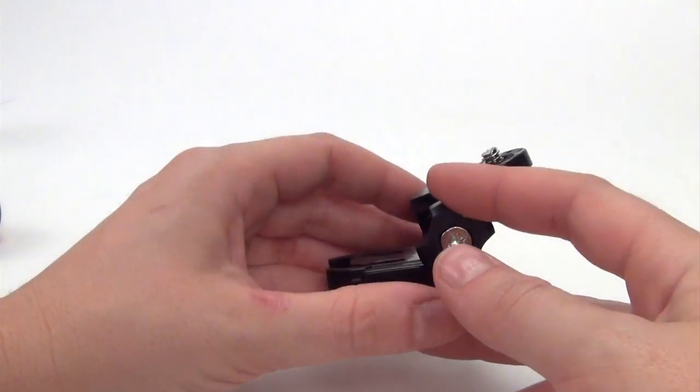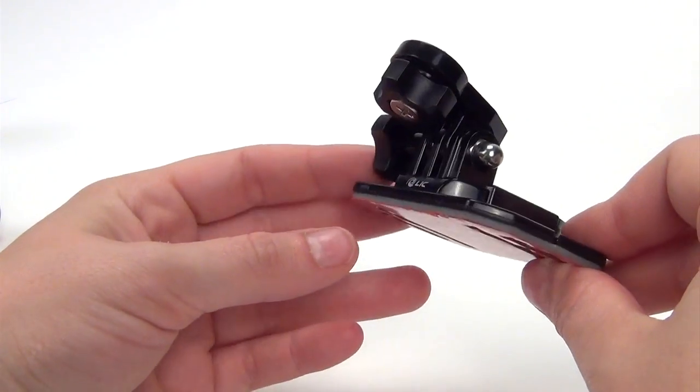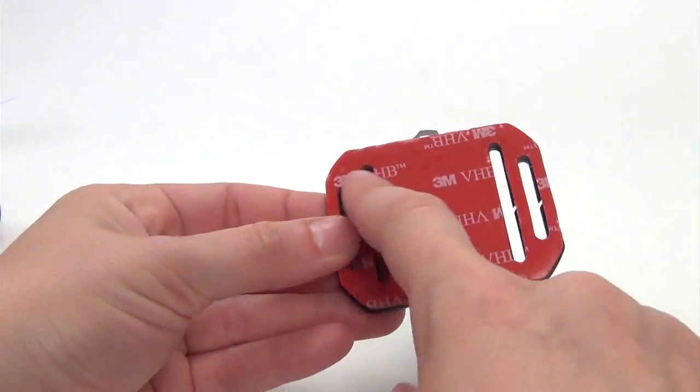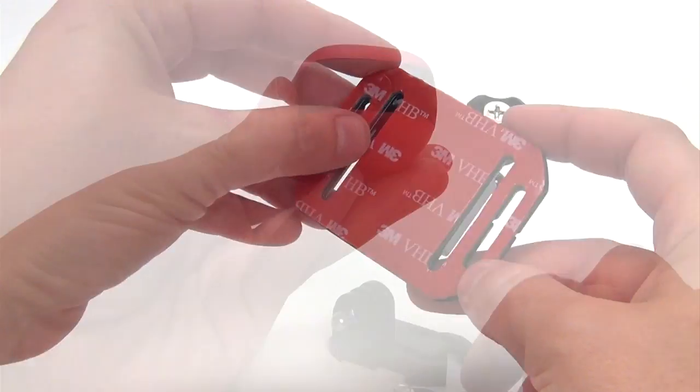Next, there is the adjustable mount. This flat based adjustable mount is comprised of several pieces. On the bottom, you'll see that it comes with one adhesive patch that is ready for use and an additional one in the package.